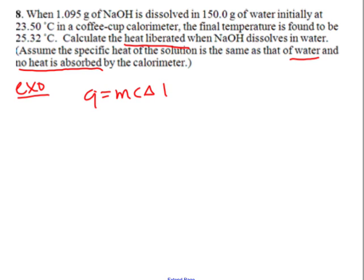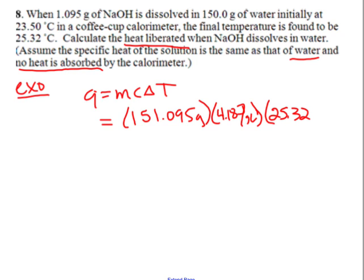When 1.09 grams of sodium hydroxide are dissolved in 150 grams of water initially at 23.5 degrees Celsius, the final temperature is found to be blah blah blah. Calculate the heat liberated. What is that telling us? It's exothermic. So we need to make sure our final delta H is exothermic because that's what it's telling us. So they're saying assume the specific heat of the solution is the same as water. Good, we can do that. And this is the best news, no heat is absorbed by the calorimeter. So what's the only equation we have to use? mcΔT. So mass total is what? Correct, we're going to add those. 151.095 grams. The specific heat is the same as water, 4.18 joules per gram degree Celsius. Temperature final 25.32, temperature initial 23.50. So go ahead and solve for Q for me, just as is.